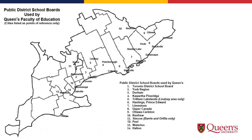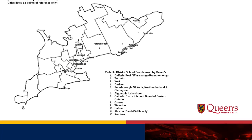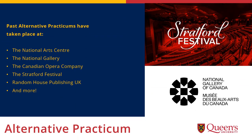Here is a list of the public school boards we use, and here is a list of the Catholic school boards. The alternative practicum is typically completed outside the school system and takes place in the winter term in March. For ACE students, the alternative practicum takes place in a non-traditional educational, artistic, or blended arts educational setting anywhere in the world.